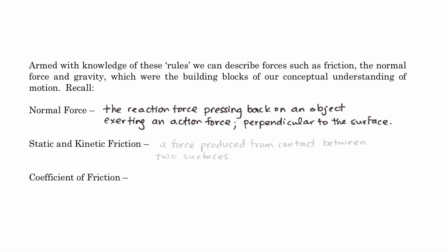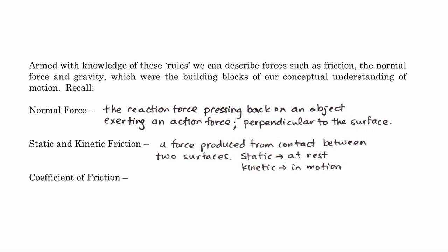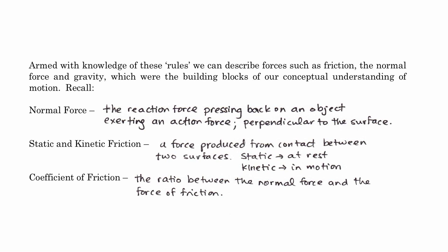Static and kinetic friction are tied to the normal force. Friction is defined as a force produced from contact between two surfaces. We have two different types: static friction, which acts between two objects at rest, and kinetic friction, which is the force of friction when two objects are pressing against each other but in motion. The coefficient of friction is simply the ratio between the normal force and the force of friction — it's unitless — and it's a measure of the two surfaces that are in contact.